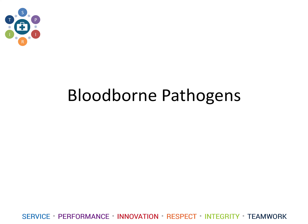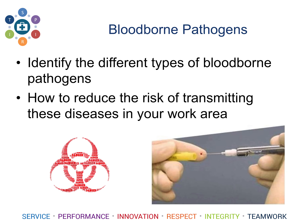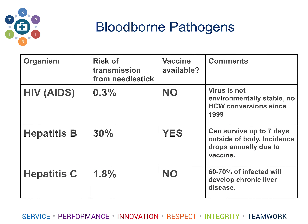Now we will move into bloodborne pathogens — identifying the different types and how to reduce risk in your clinical practice setting. When we discuss bloodborne pathogens, we are really discussing the big three: HIV/AIDS, Hepatitis B, and Hepatitis C. The biggest takeaway is your risk of transmission from a needle stick is 0.3% if the source patient has HIV. Since 1999, there have been no healthcare worker conversions from HIV-negative to HIV-positive from a needle stick. You are much more likely to get Hepatitis B or Hepatitis C from a needle stick, and for Hepatitis B we have a vaccine — please avail yourself of that vaccine.